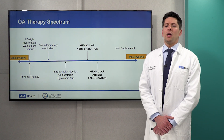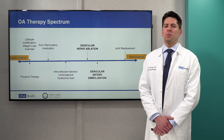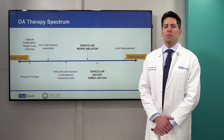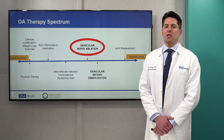In the UCLA interventional radiology department we perform two procedures to fill this treatment gap: geniculate nerve ablation and geniculate artery embolization. Both these procedures can be very effective in the right patients. Today I'll be discussing geniculate nerve ablation.